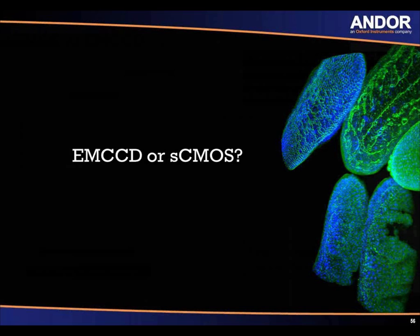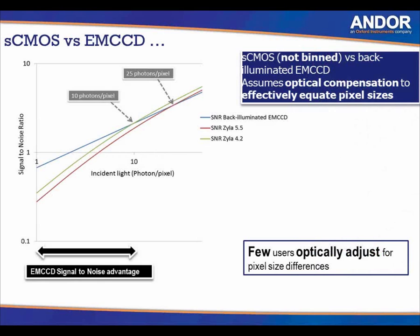Comparing EMCCD and sCMOS: the crossover point is 10 photons per pixel. If you have 10 photons per pixel or less, you need to use an EMCCD camera. Anything greater than 10 photons per pixel, you could use an sCMOS camera. The sCMOS camera is ideal for very low light applications down to as low as 10 photons per pixel — and even lower than that you would need EMCCD for the signal-to-noise advantage. Image comparisons show sCMOS and EMCCD performing comparably at higher light levels, but at 8 photons per pixel EMCCD wins out over sCMOS.